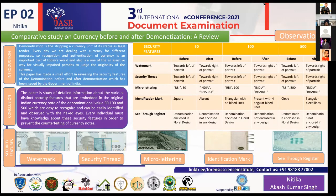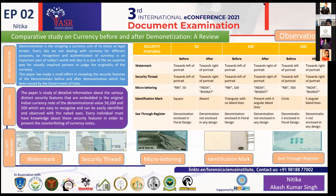After demonetization, the watermark was moved toward the right of the portrait. In the 100 rupee note, the same change occurred — before demonetization it was on the left side of Mahatma Gandhi's portrait, and after demonetization it moved to the right. The same change was applied to the 500 rupee note.